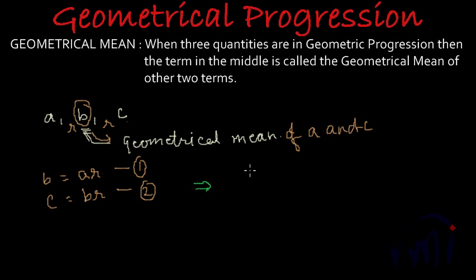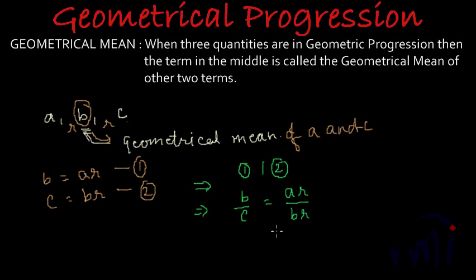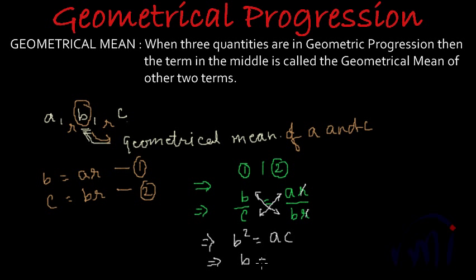If we divide equation number 1 by equation number 2, we get B over C equals AR over BR. The R and R cancel out. And if we cross multiply, we get B multiplied by B — that is B squared — is equal to AC.